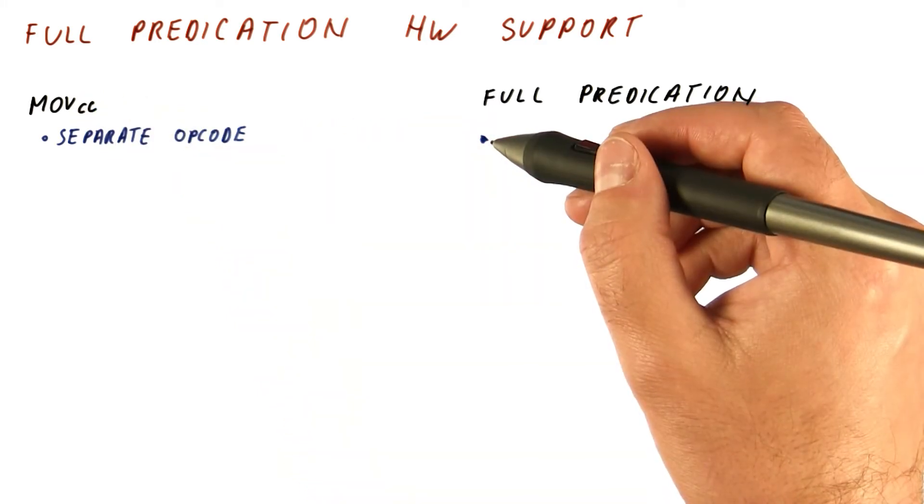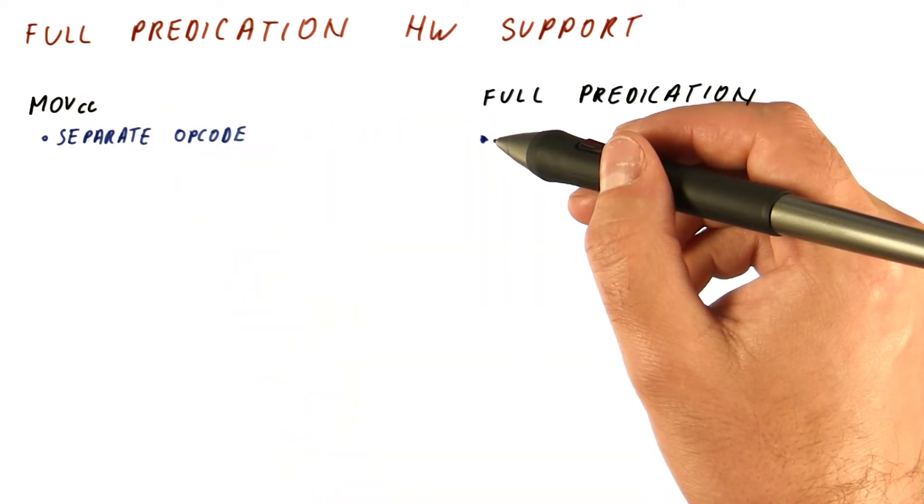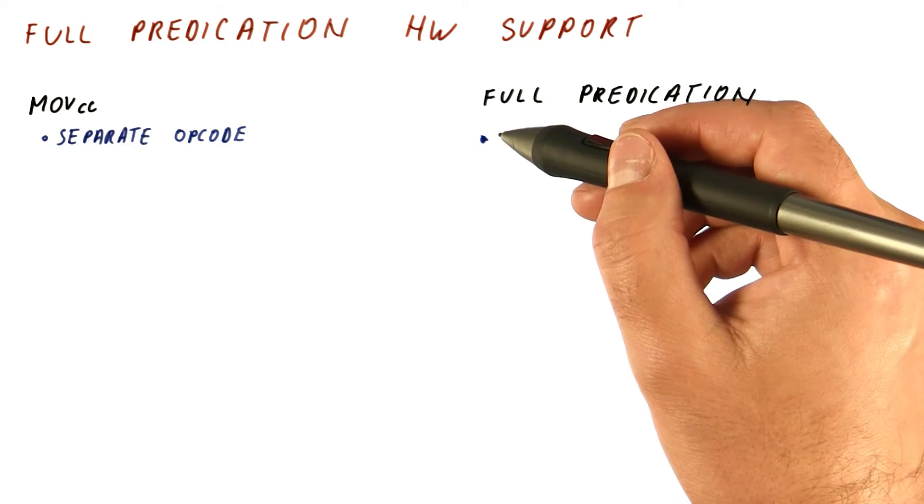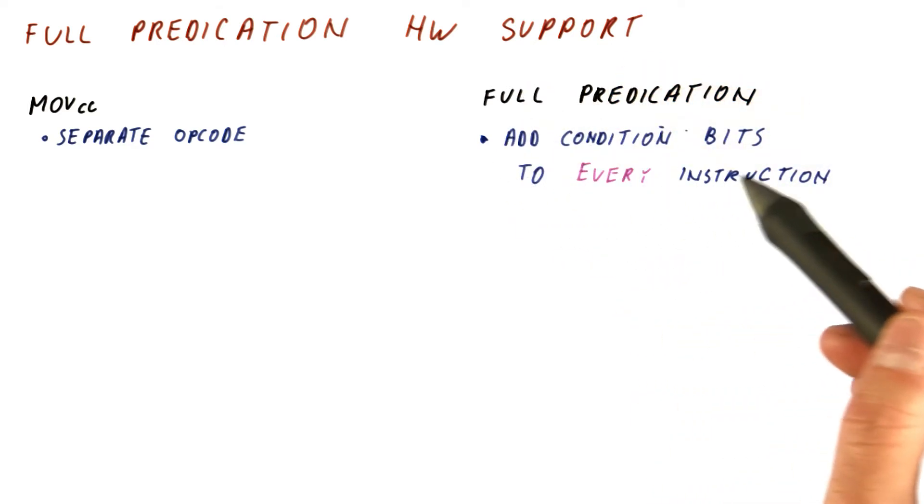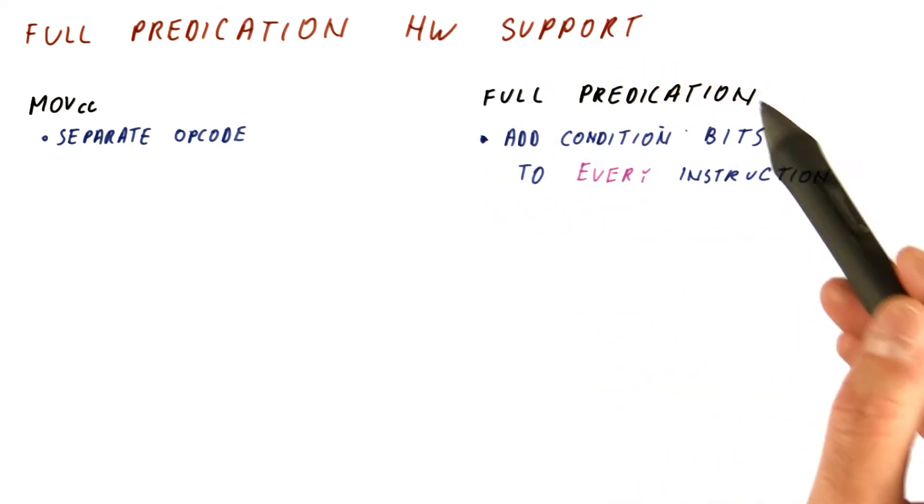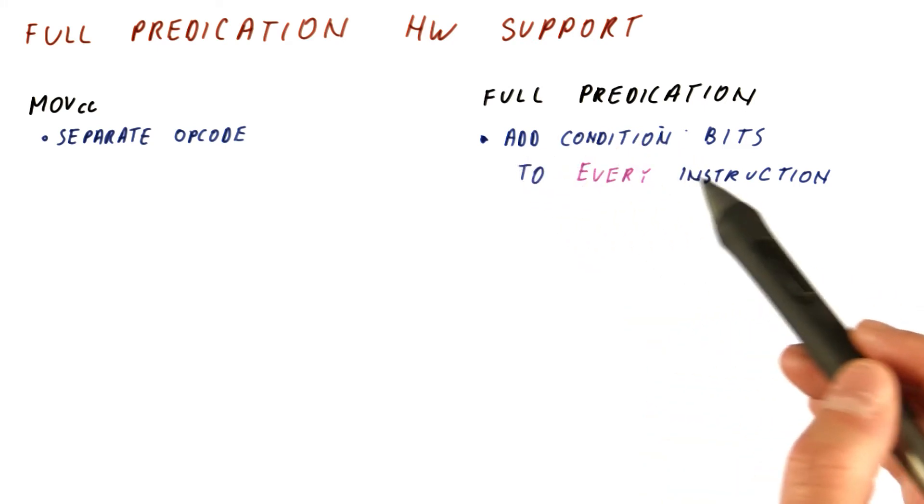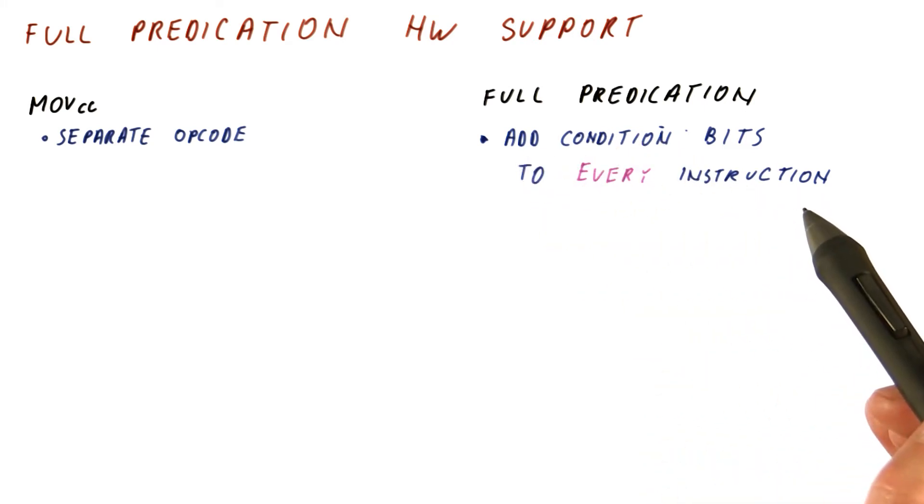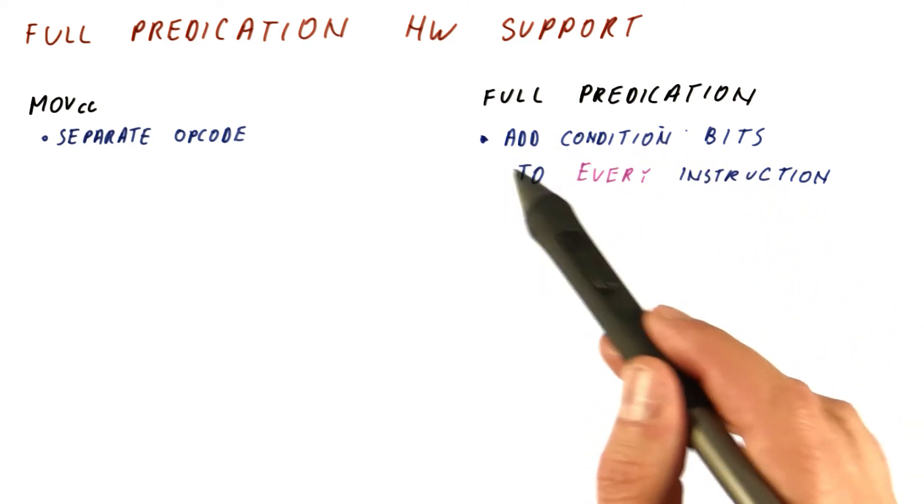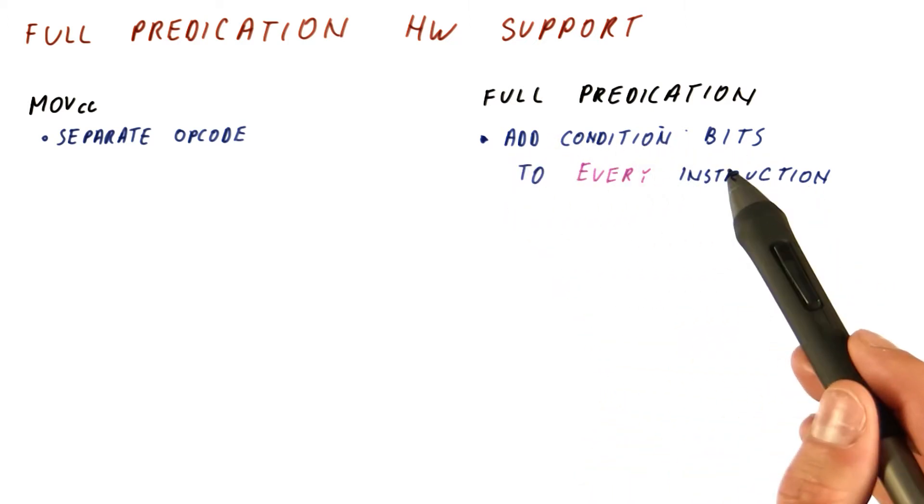For full predication, we use the same instructions that we use without conditions. We add condition bits for full predication. However, we add condition bits to every instruction. So every instruction word contains some bits that tell us what is the condition for writing to the destination register.